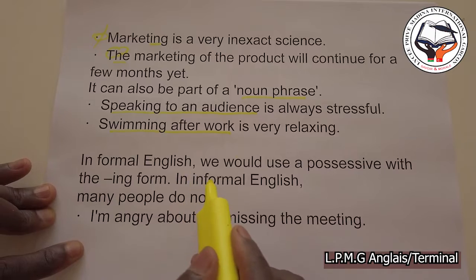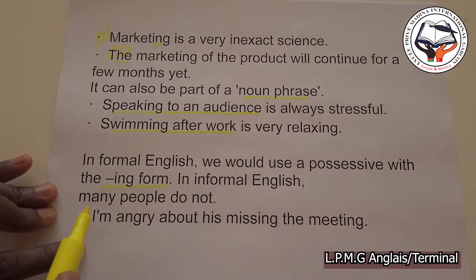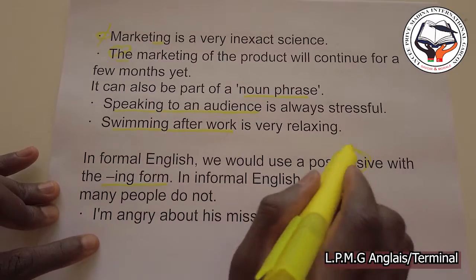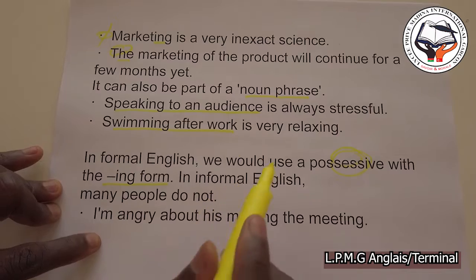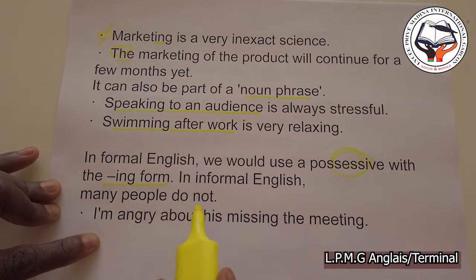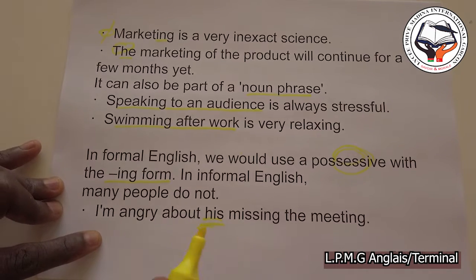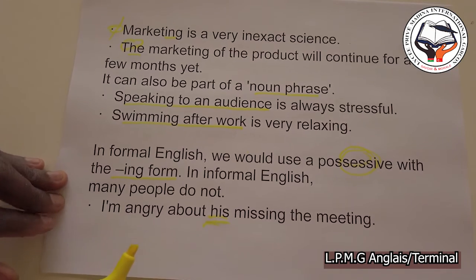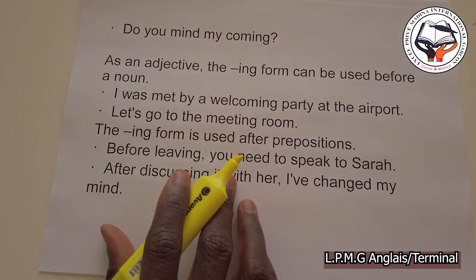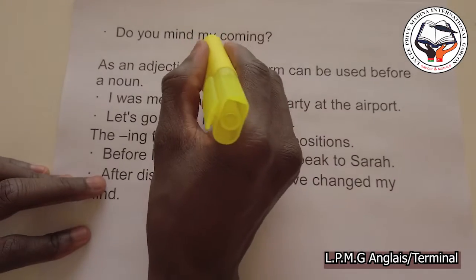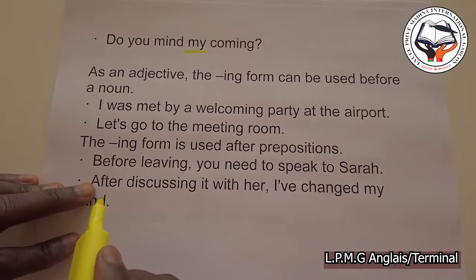In formal English, we would use a possessive with the ING form, though in informal English many people do not. For example: 'I am angry about his missing the meeting' — 'his' is a possessive. And: 'Do you mind my coming?' — 'my' is a possessive.